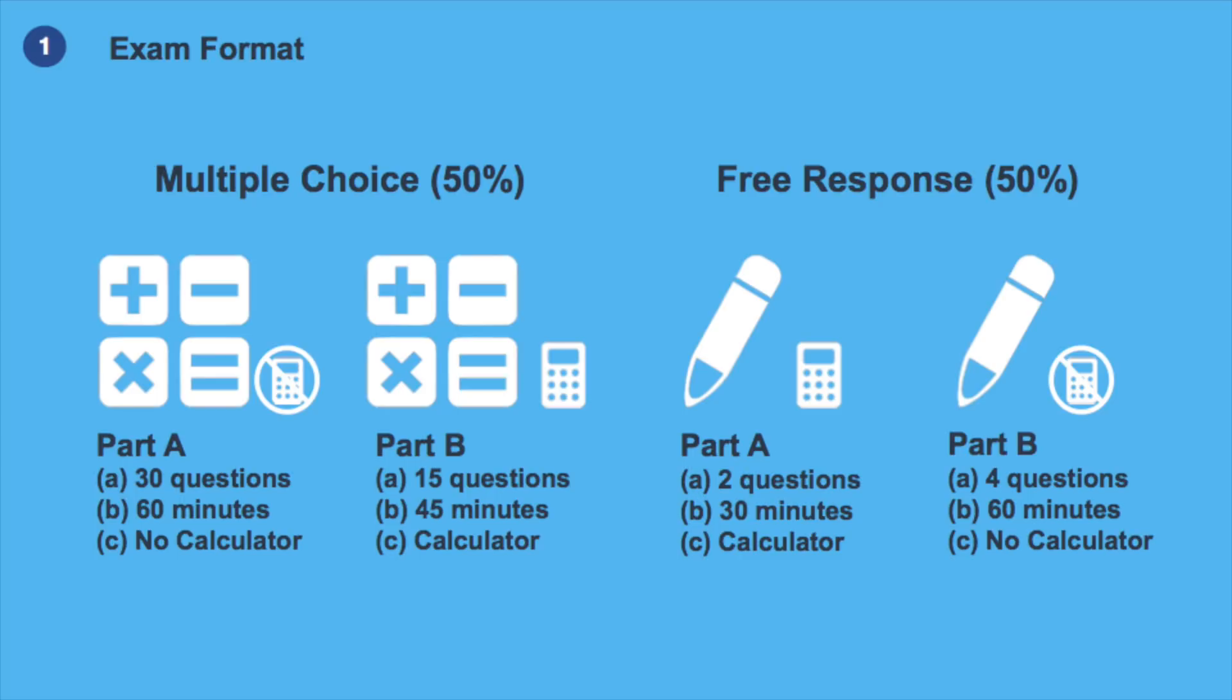In the second half of the exam, you need to answer a total of 6 free response questions. In the first section, you have 30 minutes to answer 2 free response questions. These questions will require a calculator, but you still have to show all your work in great detail in all free response questions. In the second section, you will have 60 minutes to answer 4 free response questions. In the last section, you're not allowed to use a calculator. Remember that you're not allowed to go look at other sections during the test and you have to finish your work in the allotted time for that section.